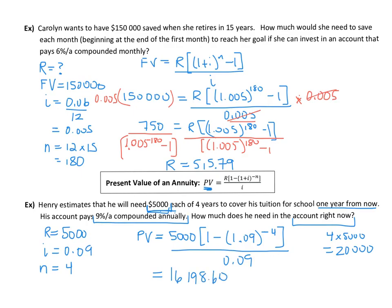And I need $16,198.60. Or Henry does, I should say. It's not me, it's Henry. So as long as he has that much in his account and he continues to earn 9% per annum compounded annually, then he will have enough money to give himself $5,000 each of four years over the next four years.